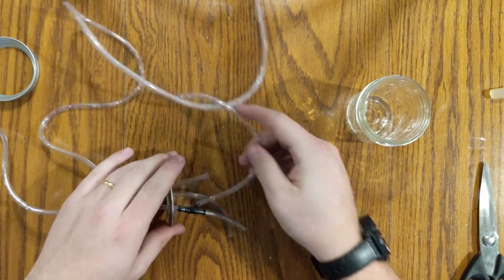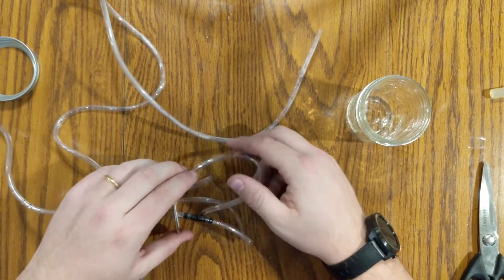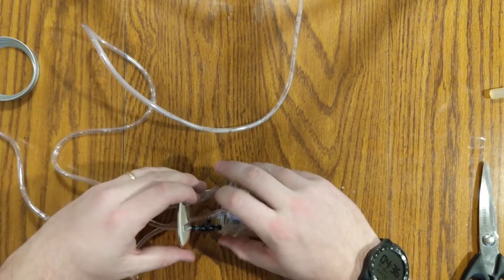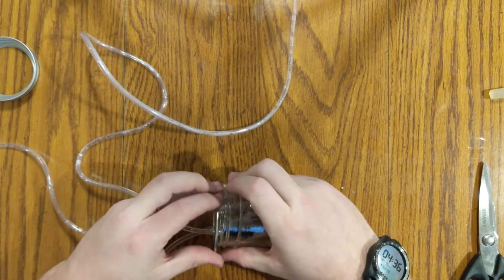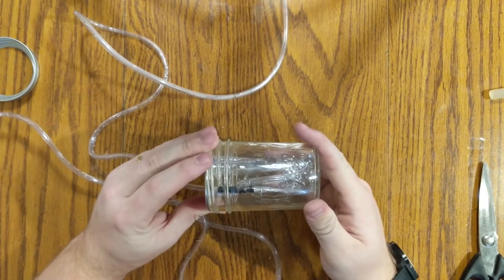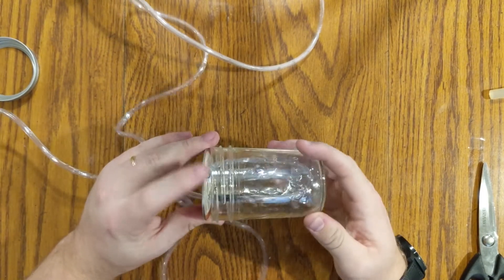So this is the basic structure of the inside of our pump. We're going to go ahead and put it in the jar. Now when we put it in the jar, we want to make sure that that looped piece of hose goes all the way to the top.